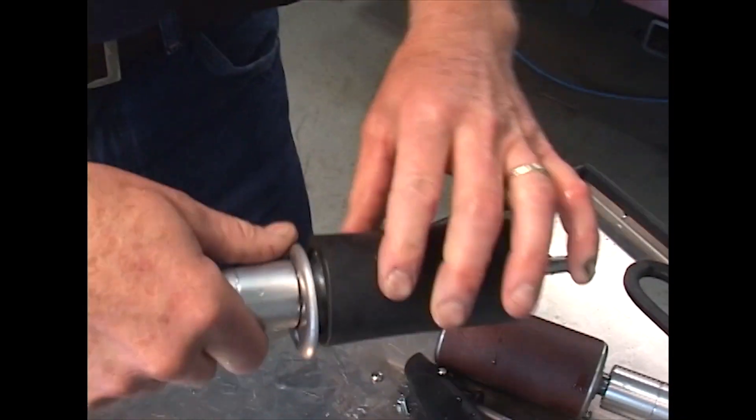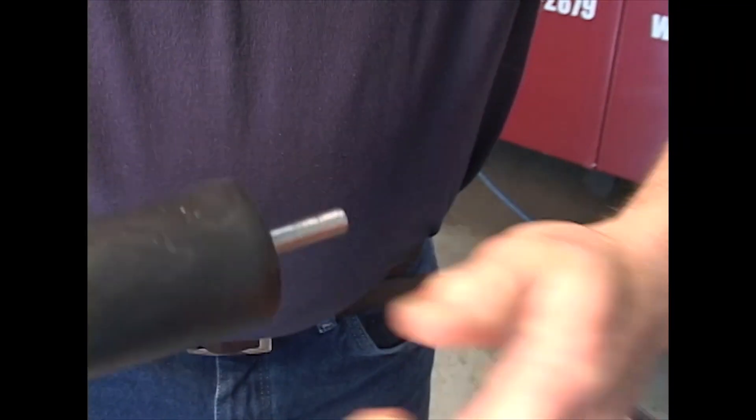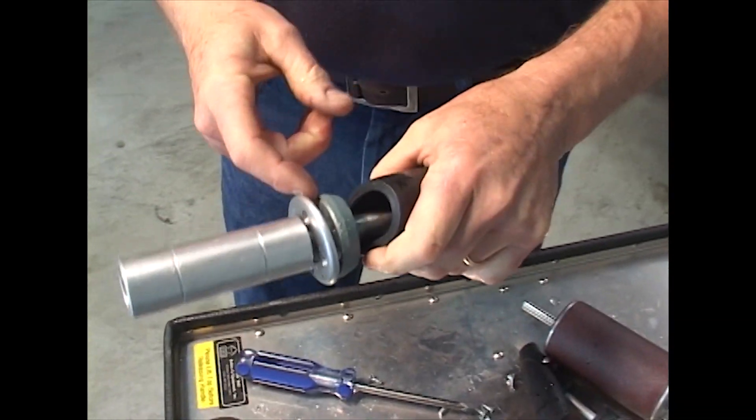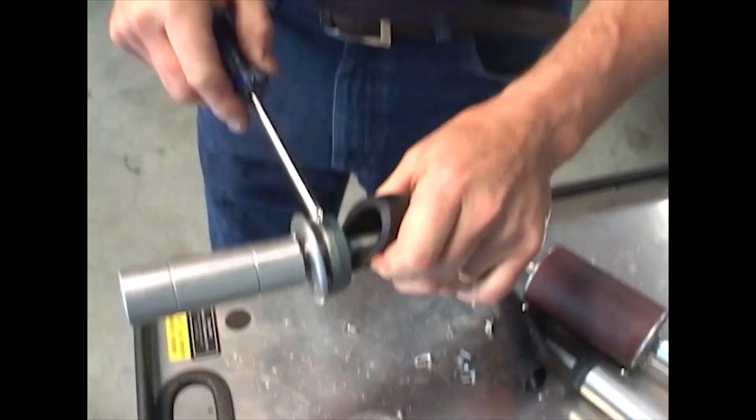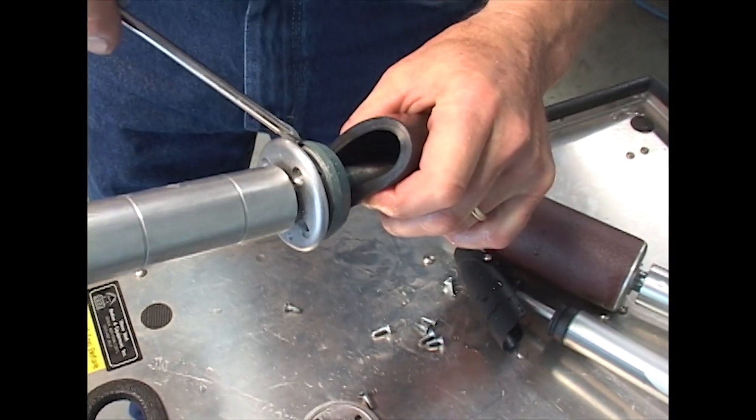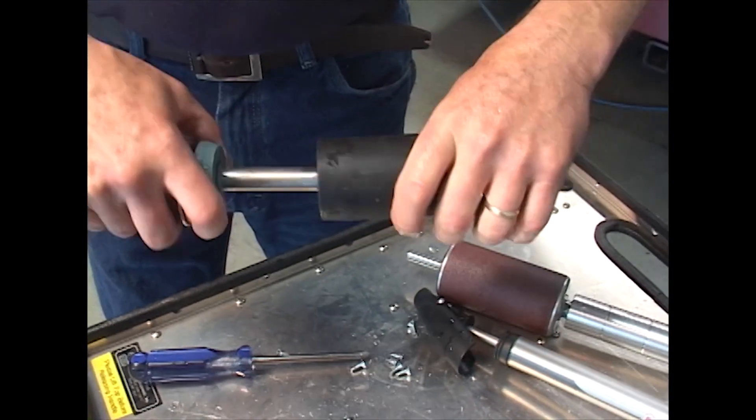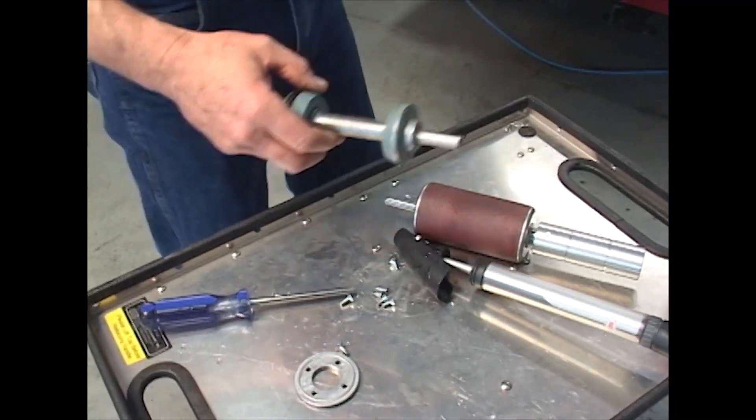You don't want to use any screwdrivers to remove the bladder because you want to use only your hands. If you pry it with the screwdriver here, you will damage the seal rim. This is a soft magnesium metal. Remove it like that.